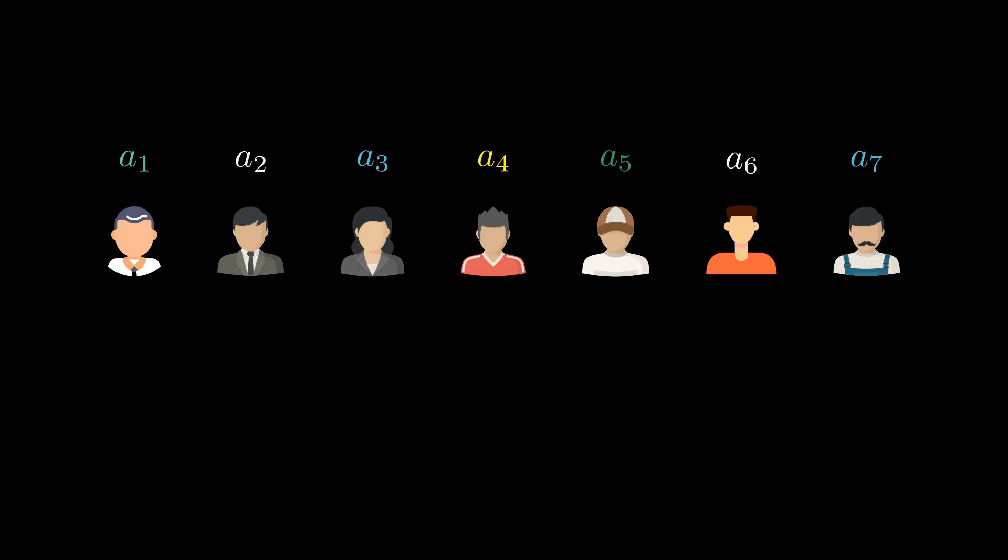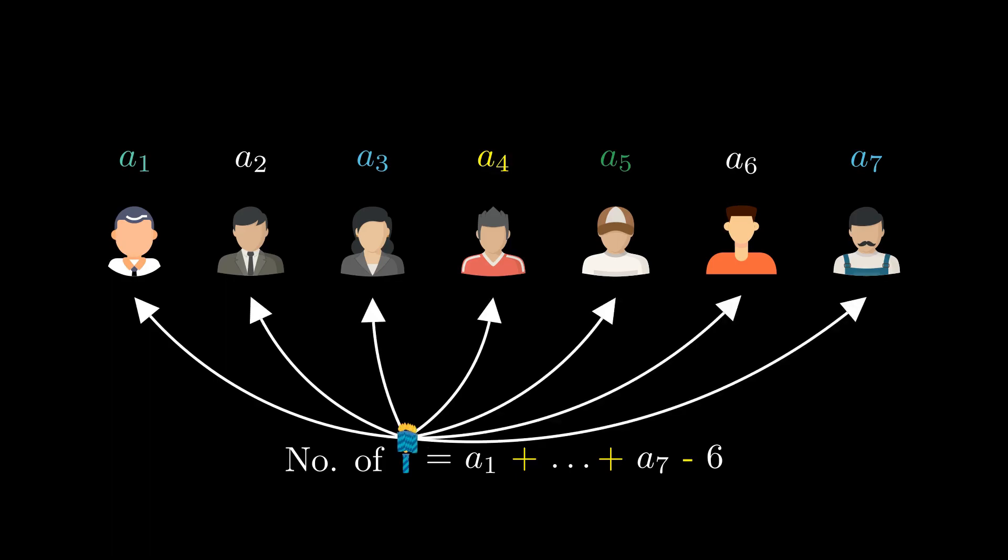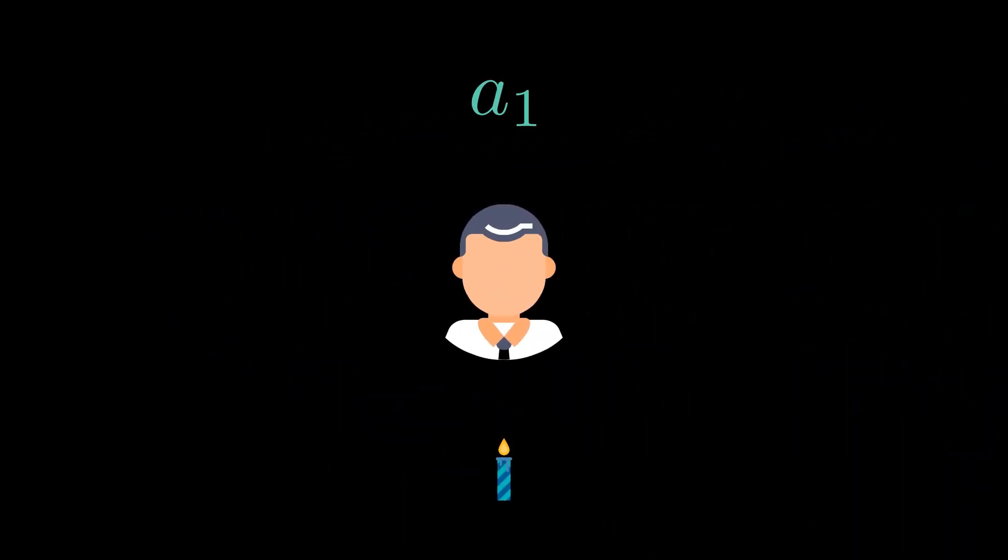These friends have a bunch of candles, exactly the sum of their ages minus six. And, as you'd expect, everyone wants enough candles to match their age. The big question is, prove that no matter how they distribute the candles, at least one of them will have enough candles for his birthday. Let's dive in and solve this together. Shall we?